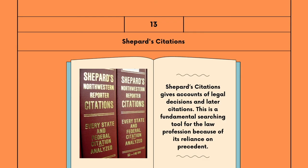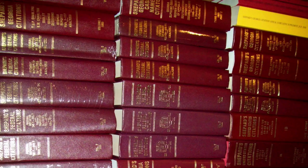Is a citation index similar to indexing? A citation index is a different approach to indexing. The indexes consist of a list of articles with a sublist under each article of subsequently published papers that cite those articles. In other words, given a particular paper, a citation index shows who cited that paper at a later point in time. Shepard's Citations gives accounts of legal decisions and later citations, and is a fundamental searching tool for the law profession because of its reliance on precedent. Citation indexing, however, is relatively new as a general reference tool.